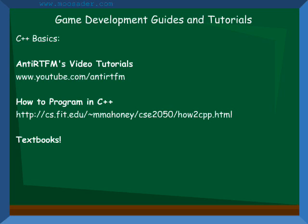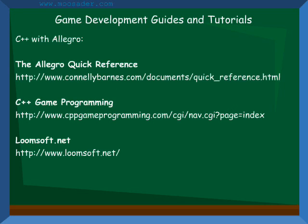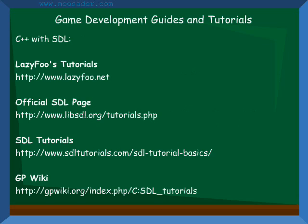Picking up a textbook on C++ or any other language you're learning is also a good idea, since they cover the basics in a very structured format. A few places you can go for Allegro tutorials are the Allegro Quick Reference, CPPGameProgramming.com, Wimsoft.net, and my website. Some places to learn about SDL are LazyFu.net, the official SDL webpage, SDLTutorials.com, and GPWiki.org.